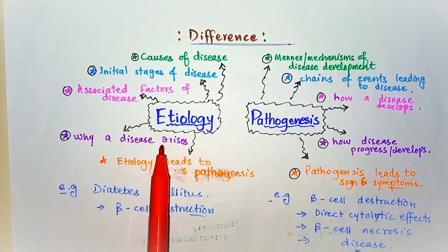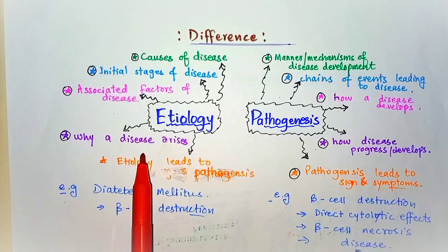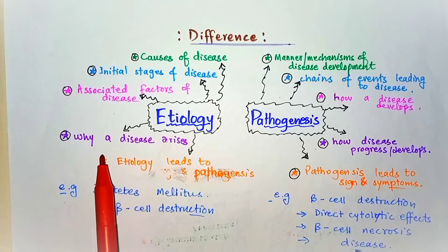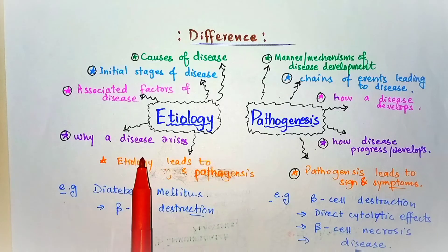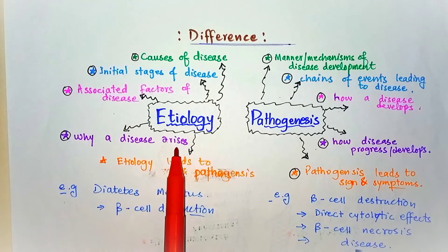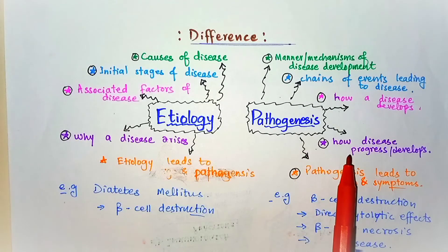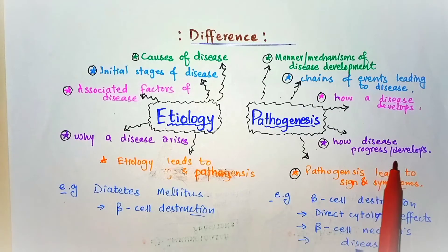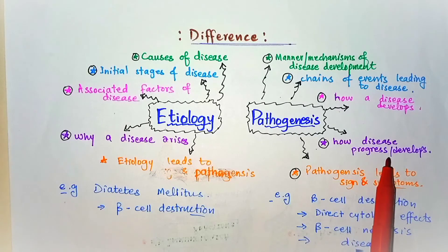The fourth point: in etiology we find the answer to the question 'what is the cause of a disease that makes any particular abnormality of the body?' In pathogenesis, we find the answer to the question 'how does the disease progress or develop?' — leading to the signs and symptoms used to treat infectious or other diseases and any abnormality.